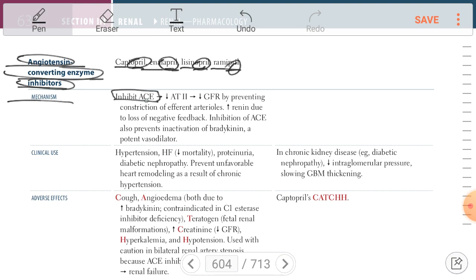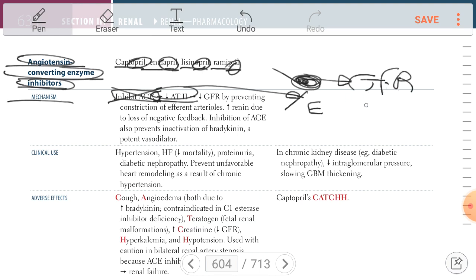The mechanism of ACE inhibitors is inhibition of ACE. ACE converts angiotensin 1 into angiotensin 2, so if there is inhibition of ACE, there is a decrease in angiotensin 2. Angiotensin 2 acts on the efferent arteriole of the glomerulus causing vasoconstriction, which increases hydrostatic pressure and increases glomerular filtration rate.